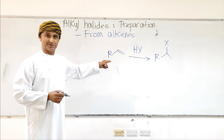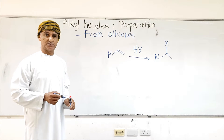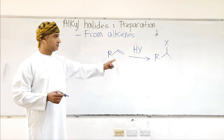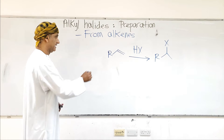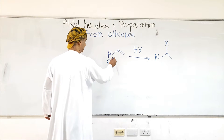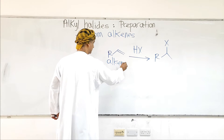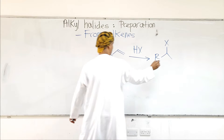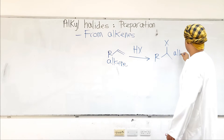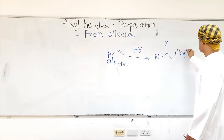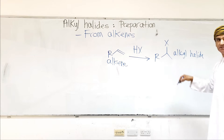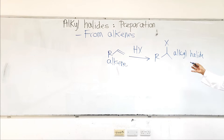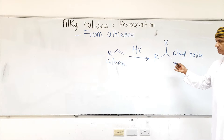Alkenes undergo electrophilic addition reactions with HX to make an alkyl halide. That is obviously an alkyl halide, and this is an alkyl group. So this is one way to make alkyl halides from alkenes.